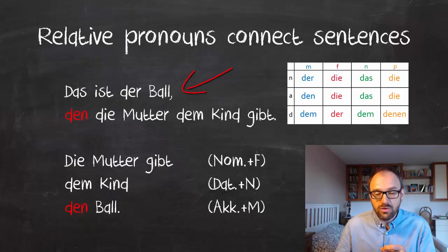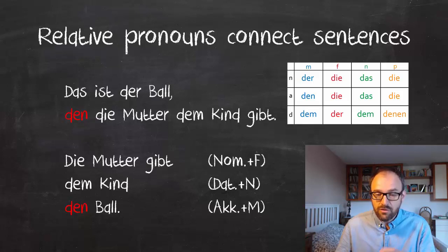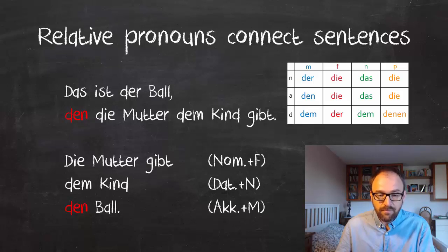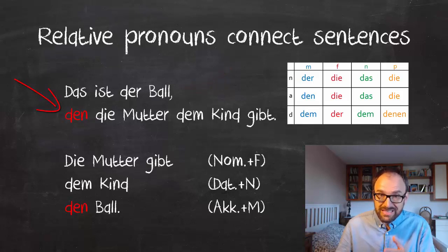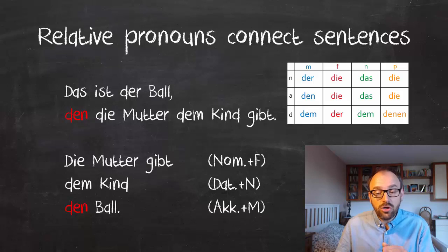Now we are going to focus on the ball: 'Das ist der Ball, den die Mutter dem Kind gibt.' 'Der Ball' is masculine and it's a thing — and things are usually in the accusative case. Masculine and accusative is 'den'. So: 'Das ist der Ball, den die Mutter dem Kind gibt' — that's the ball which the mother gives to the child. Note that the word the relative pronoun refers to — 'der Ball' — and the relative pronoun itself — 'den' — don't have to be in the same case, because what determines the case of the relative pronoun is what's going on in the relative clause.